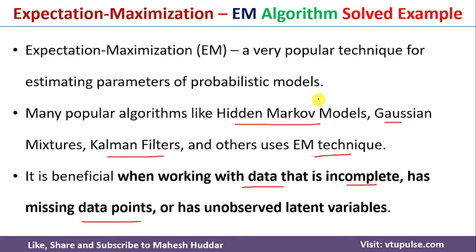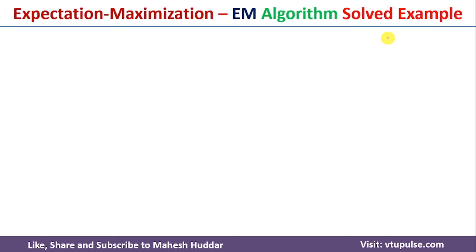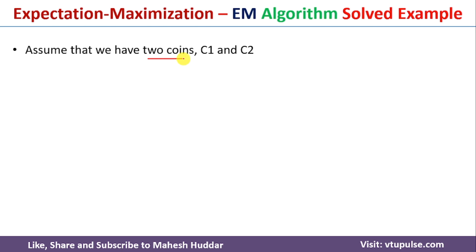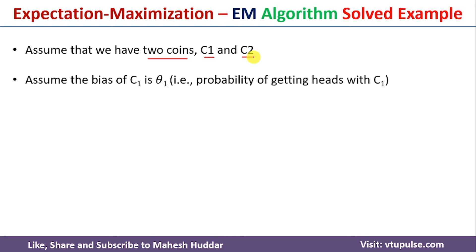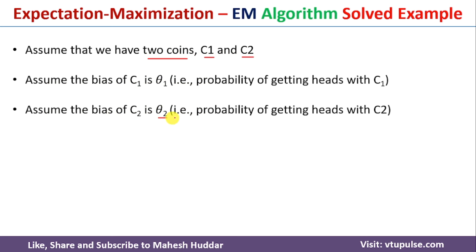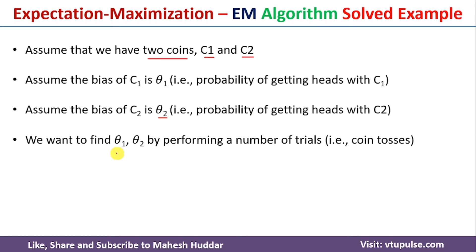In this video, I will discuss how we can apply the EM technique on a given data set and calculate the probabilistic values. To understand this particular EM algorithm, I have considered the coin flipping problem. I have taken two coins: C1 is the first coin and C2 is the second coin. The bias of C1 is theta 1, which is the probability of getting heads with C1. The bias of C2 is theta 2, the probability of getting heads with C2. The goal is to calculate theta 1 and theta 2 by performing a number of trials or experiments.